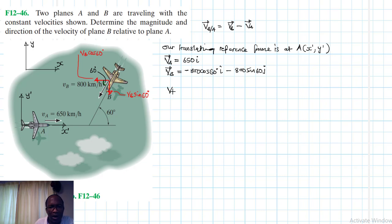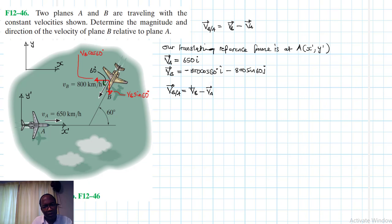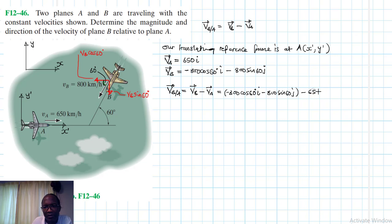Therefore VB/A, which equals VB minus VA, is equal to: negative 800 cos 60 i, minus 800 sine 60 j, minus 650 i.